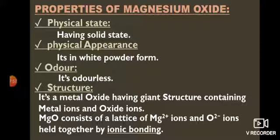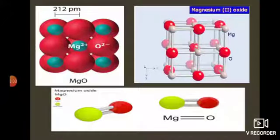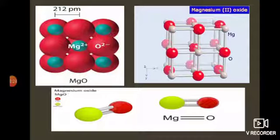A sort of covalent bonding also exists in magnesium oxide. Looking at the structure, there is a double bond between magnesium and oxygen due to this covalent character. The structure is cubic. Forces of attraction between the doubly charged magnesium and oxygen are stronger than in sodium oxide, so more energy is required to break them.